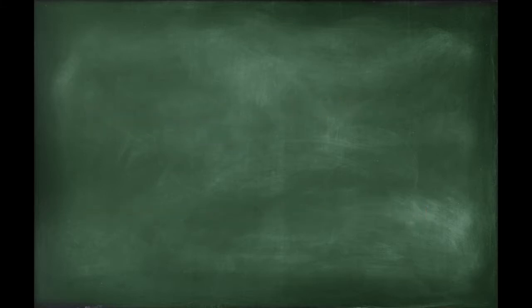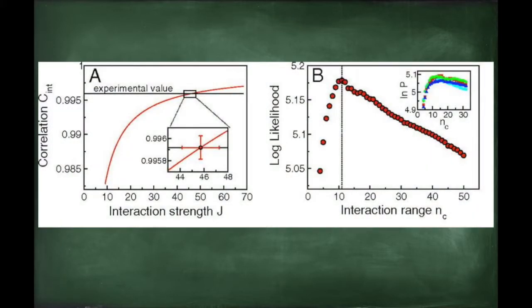The only thing left to do is to find the values of j and nc that give us the probability distribution that maximizes entropy. These values of j and nc are constrained by the experimental data.